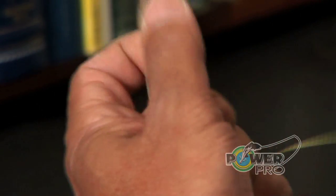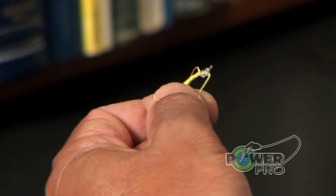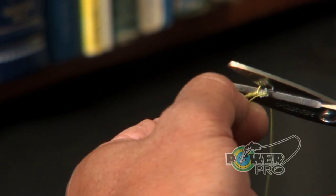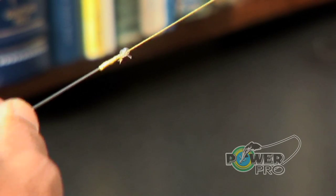And from here, you wrap back, and you trim that Power Pro. And that is your Bob Sands knot.